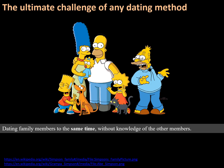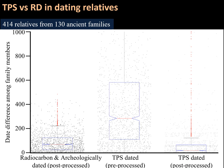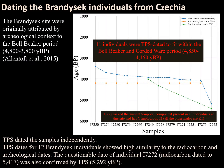Of course, the ultimate challenge of any dating method is to date family members to the same time, irrespective of when exactly. And unlike alternative dating methods, TPS was applied independently for each family — that is, without knowing how old the other family members are. Fortunately, our dataset included over 400 relatives from 130 ancient families, which after processing, we showed that we can predict more accurately to the same time than the published dates.